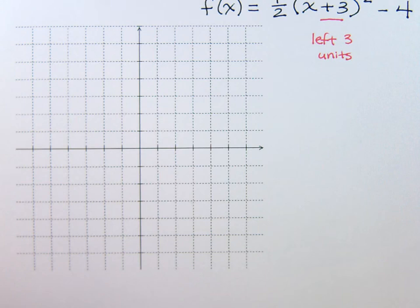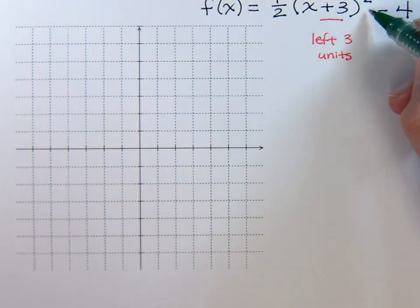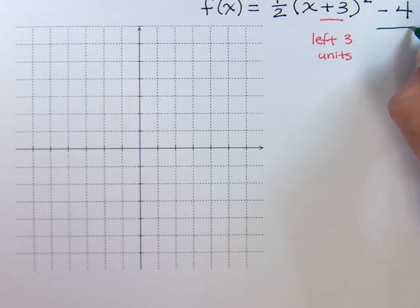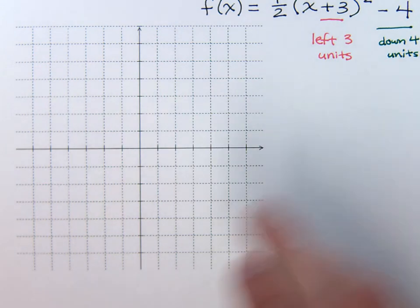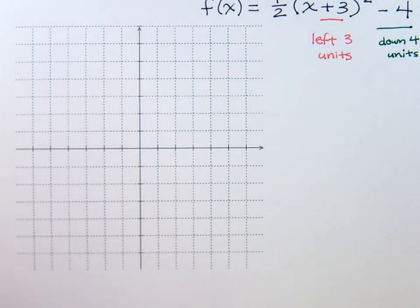And then we look at the number that's at the very end. This negative four that is not attached at all to the square tells me how I move up and down. So, I'm going to do exactly what I see. I'm going to go down four units. Alright, let's go ahead and start there, start with what we do have.